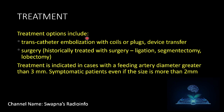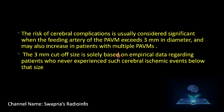Treatment options include transcatheter embolization with coils, plugs, or devices. Historically, surgery was the treatment — either ligation of the feeder, segmentectomy, or lobectomy. Treatment is indicated when the feeding artery diameter is greater than 3 mm, or in symptomatic patients even if the feeder is greater than 2 mm. The risk of cerebral complications is considered significant when the feeding artery exceeds 3 mm in diameter, and may also increase in patients with multiple PAVMs. The 3 mm cutoff is based on empirical data from patients who did not experience cerebral ischemic events below that size.